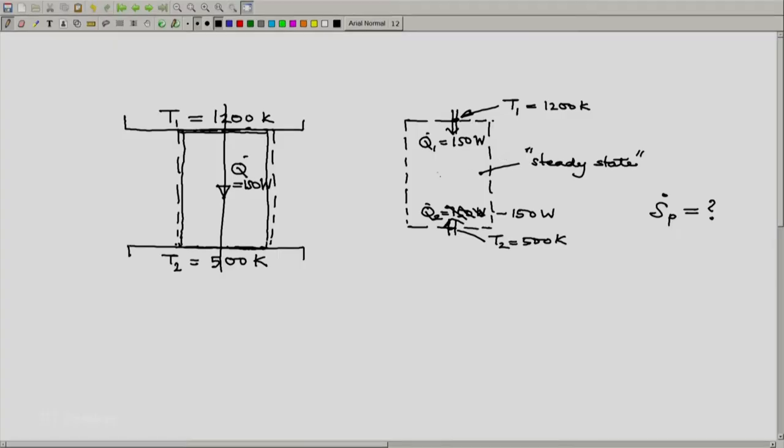Now since we notice that there is no work interaction involved, there is a steady state so our change in energy is zero. There is no work transfer. And the amount of heat transfer, net amount of heat transfer is zero because 150 watt is coming in from the top, 150 watt is going out from the other end. So hence a steady state is maintained.